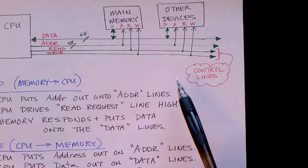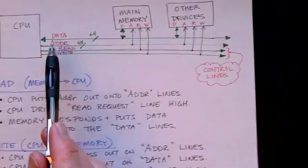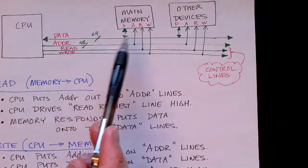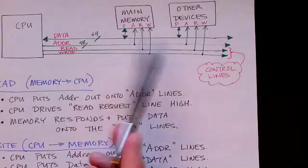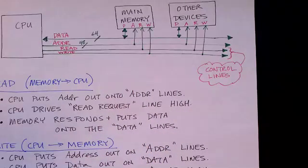And these are used when there are multiple devices trying to control the bus. In this simple model here, only a single device, the CPU, controls the bus, and other devices are essentially slaves and passive, and they just wait for the control lines to tell them when to do something.